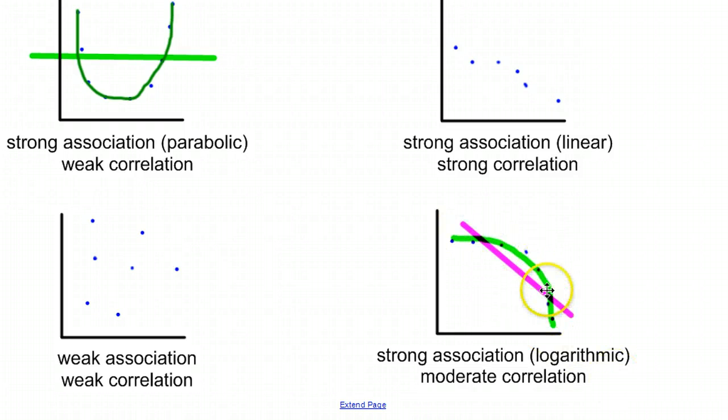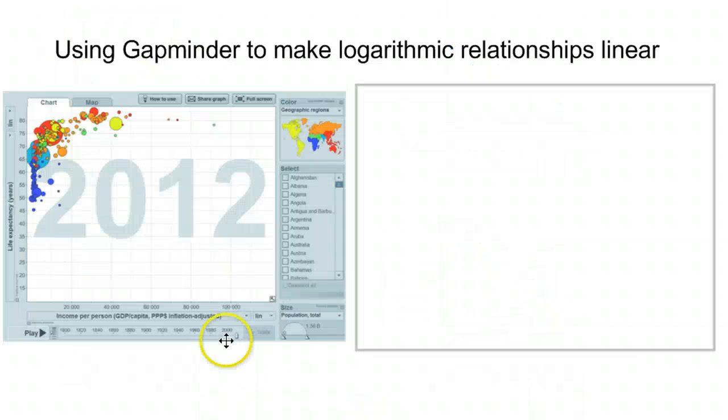Whenever you recognize something having some sort of logarithmic type of pattern, you're always going to want to work with it in that way. So, for example, if you're using the website Gapminder.org, you can create graphs, and this would be an example of a graph that forms that logarithmic pattern, where the data is shooting up and then kind of levels off and shoots across.